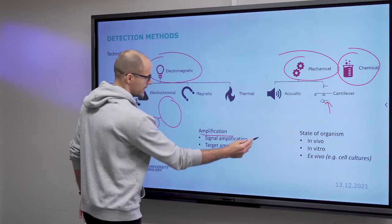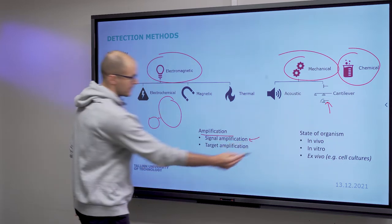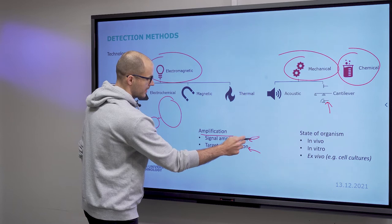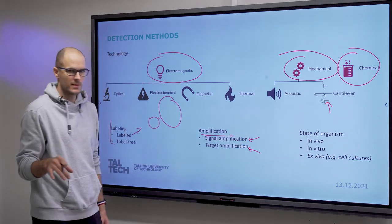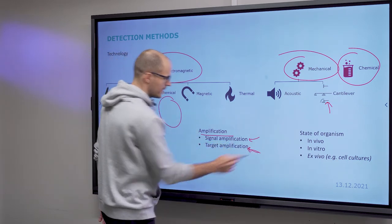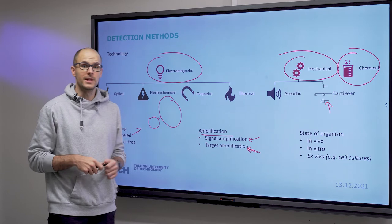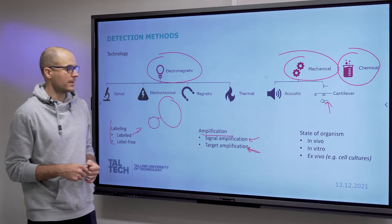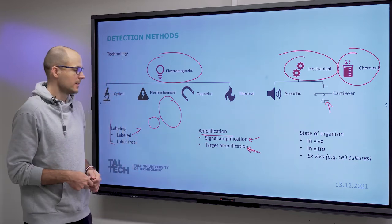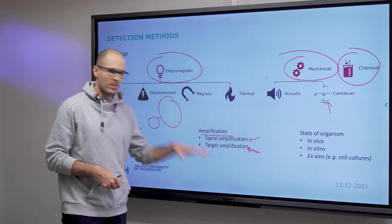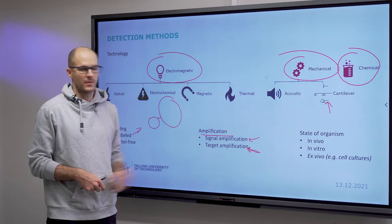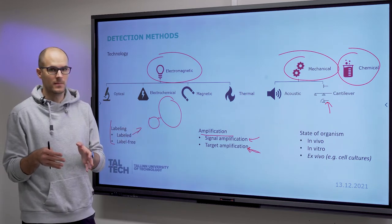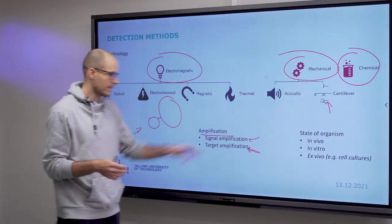So amplify the signal by doing this, and then do electronic amplification, or amplify the target by, for instance, nucleic acid amplification or enrichment by evaporating liquid sample and pre-concentrating the sample. That's the target amplification type. Purification is also something that you can consider as a target amplification. Purification of the sample to leave only the target in the highest quantity.